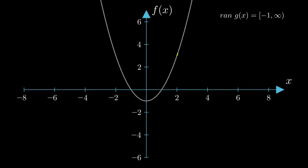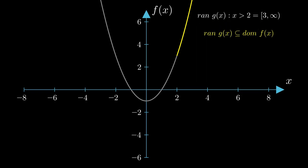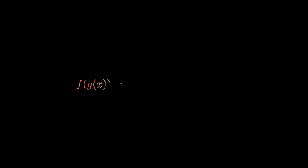However, if we restricted the range of input numbers for g(x) such that x must be greater than 2, notice how this restricts the range of output numbers produced from this function. It turns out this new range of g(x) is in fact a subset of the domain of f(x). Now a composite function does exist. To compute the composite function, we replace x in our function f(x) with our entire inside function g(x). So the composite function becomes the natural log of x squared minus 1.